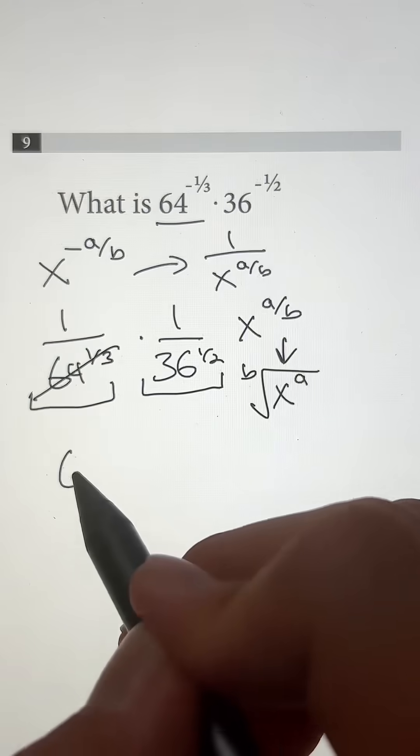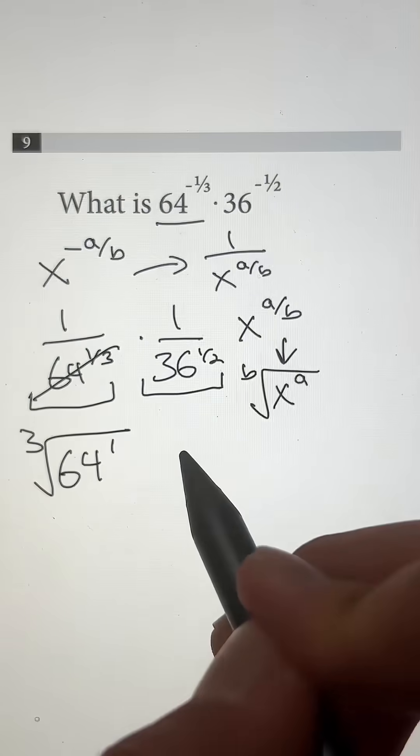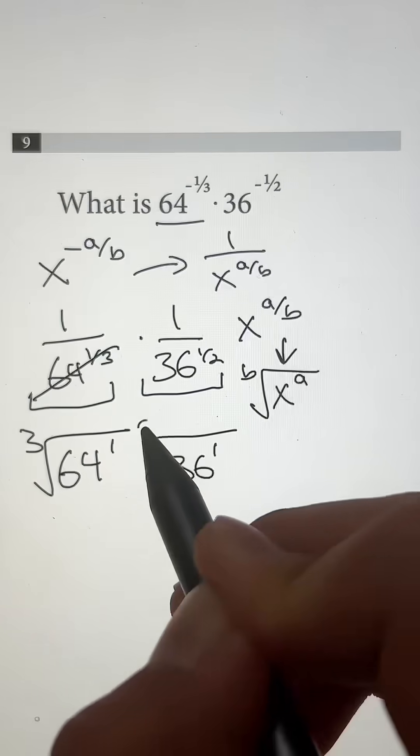So 64 to the one-third just turns into 64 to the first power with the root of three. And 36 to the one-half power just turns into 36 to the first power with the root of two.